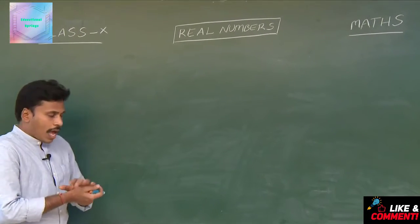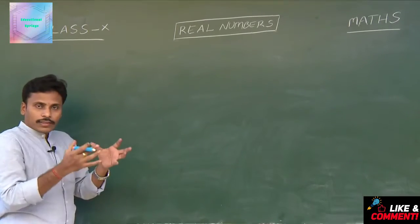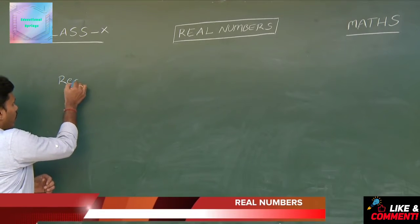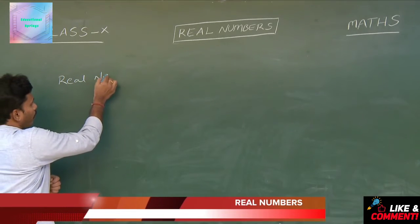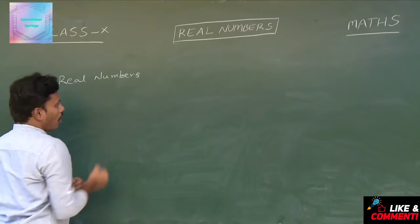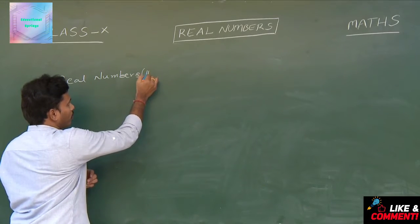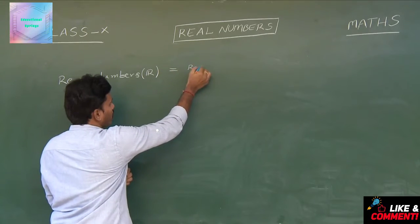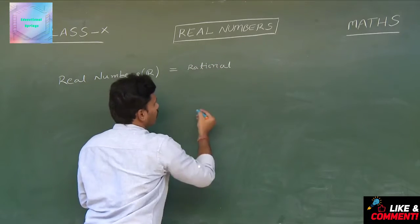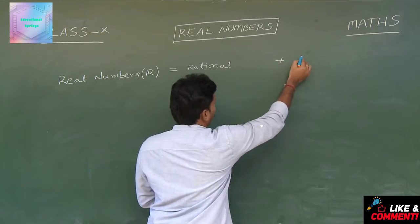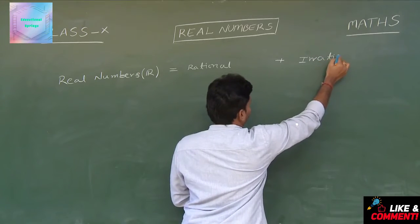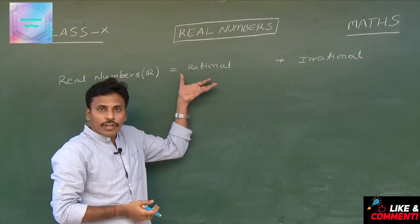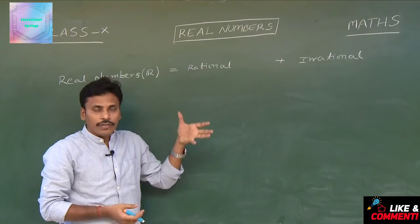Real numbers are the union of both rationals and irrationals. These real numbers are denoted by the letter R — capital R. It is the union of rational numbers plus irrational numbers.